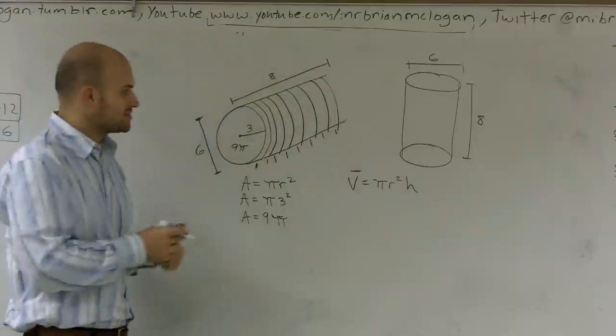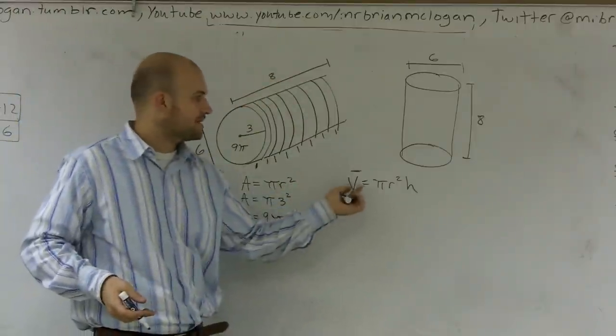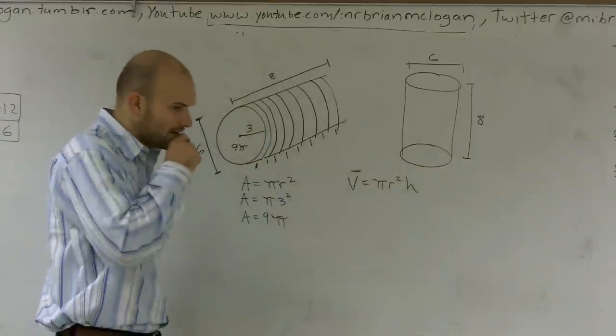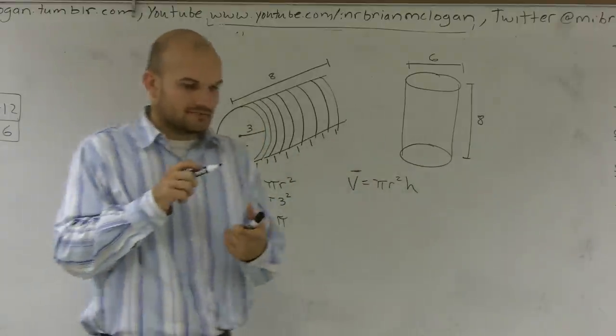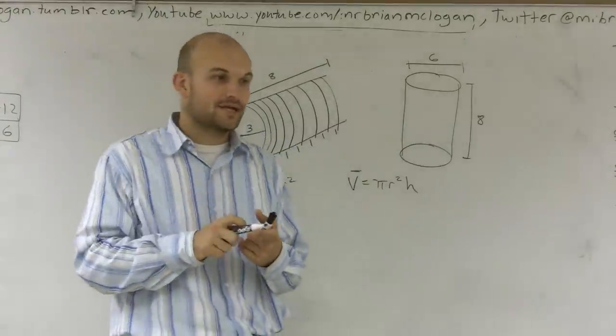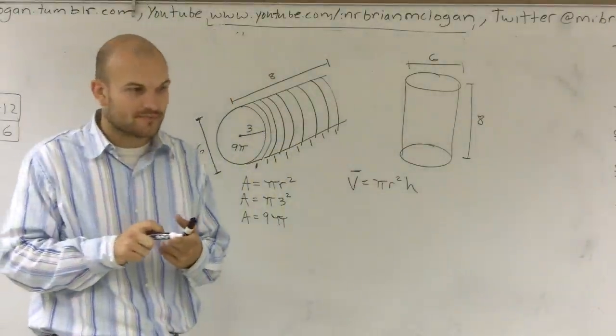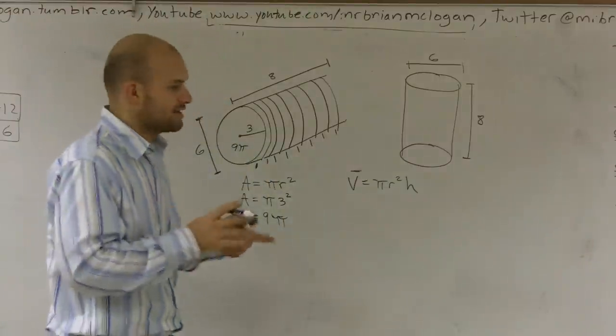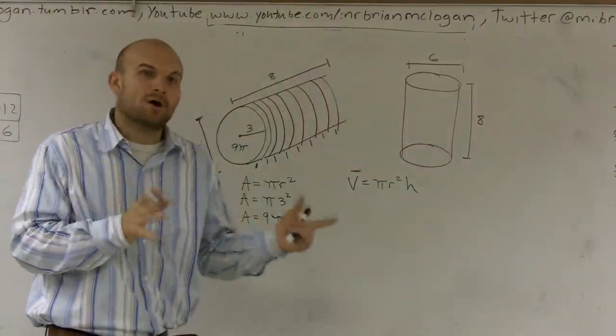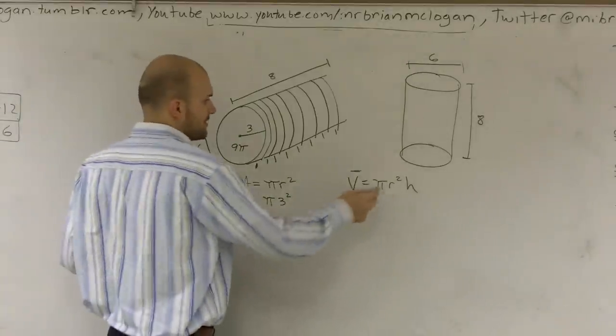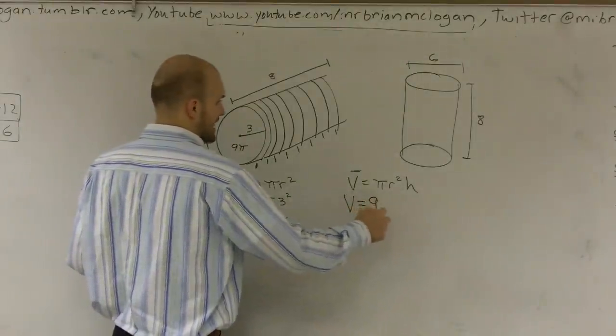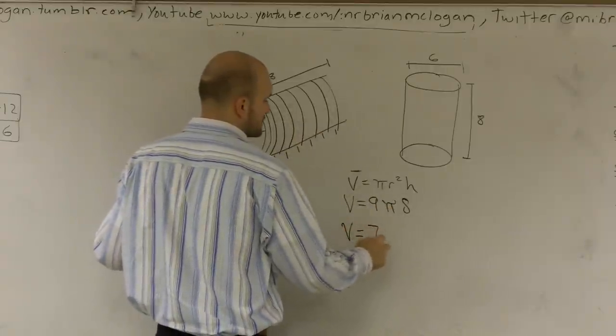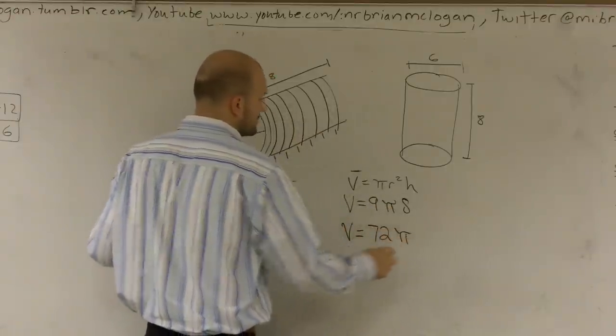which again is my height. So that's why I multiply by whatever my area of my base is times your height. So whenever you're dealing with cylinders, rectangular prisms, or even triangular prisms, what you're going to do is you're going to find the area of the base and multiply it by the height. So therefore, this is going to be volume equals 9 pi times my height, which is 8. So volume equals 72 times pi.